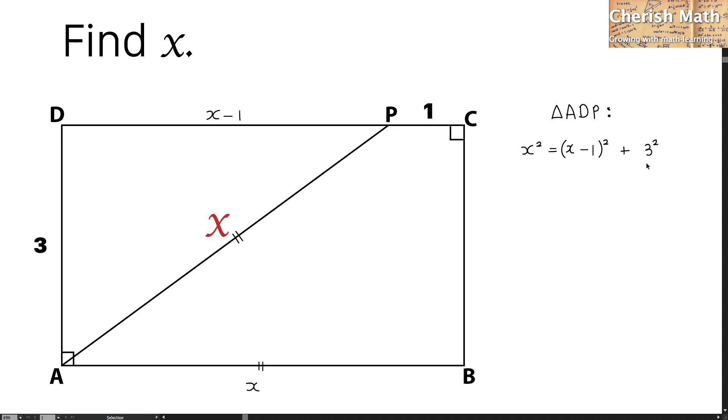This is the first equation, expanding it. I'm going to cancel off the X squared. So, the value of X that I get is 5 units.